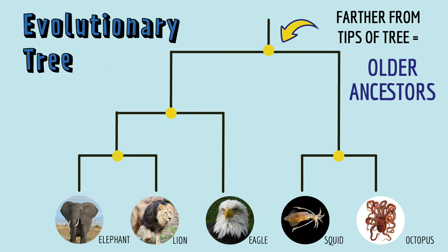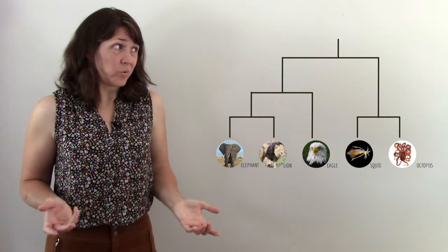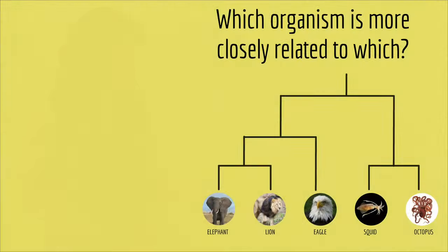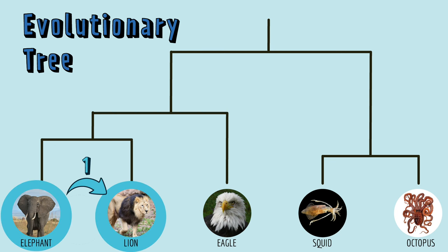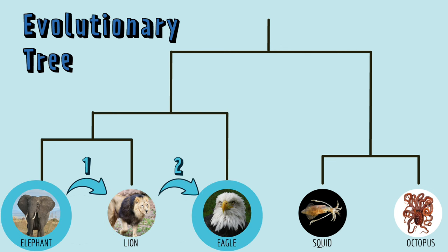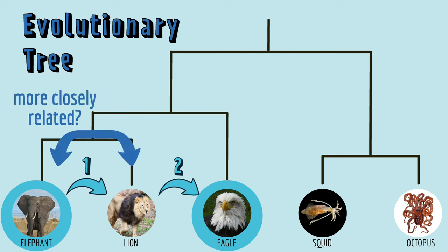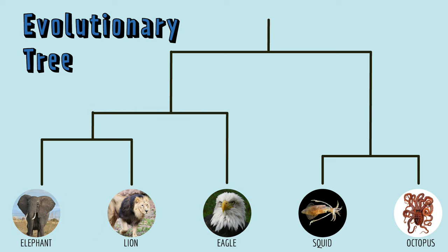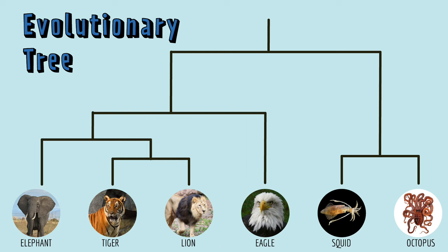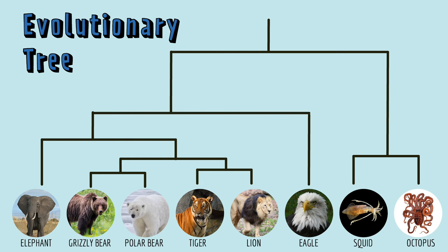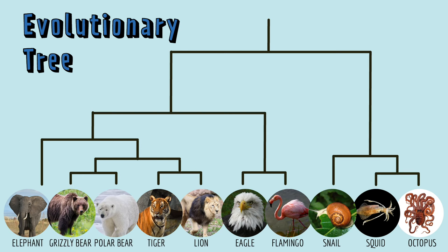Nodes that are farther away from the tips of the tree represent older ancestors. But how do you look at an evolutionary tree and tell which organisms are more closely related to which? You could count the steps. In this tree, elephants and lions are one step away from each other, but elephants and eagles are two steps away from each other. Does that mean that elephants and lions are more closely related than elephants and eagles? The problem is, the real world has more than five animals in it. There are lions and tigers and bears and many other species. On this tree, if I count the steps,